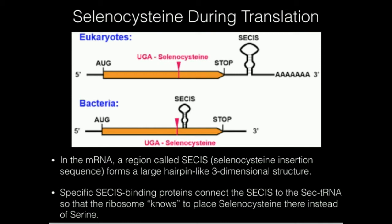There are some differences between eukaryotes and bacteria, but overall the concept is the same. This is all taking place at the ribosome. The mRNA is a transient carrier of genetic information that tells the ribosome which amino acid to add next. The codon for selenocysteine is UGA — that tells the ribosome to put a selenocysteine right here, but why doesn't it put a serine there by accident? It turns out that at different positions along the mRNA — in bacteria it's a lot closer to the UGA codon, in eukaryotes it's farther away — there's a structure called an SECIS, which stands for selenocysteine insertion sequence.